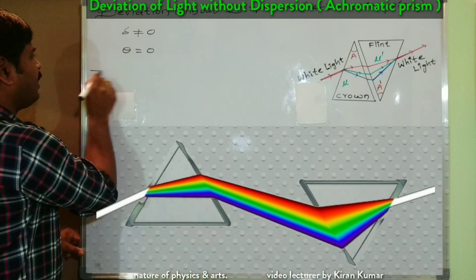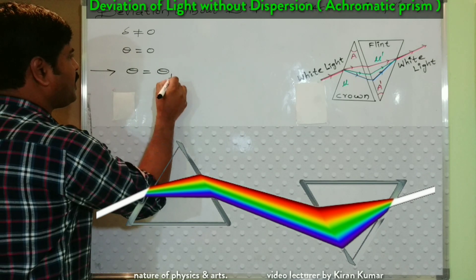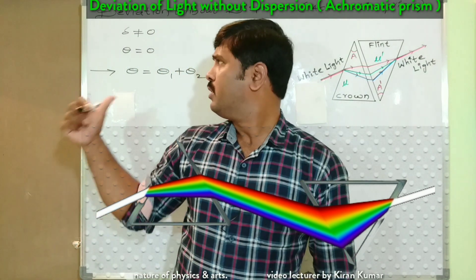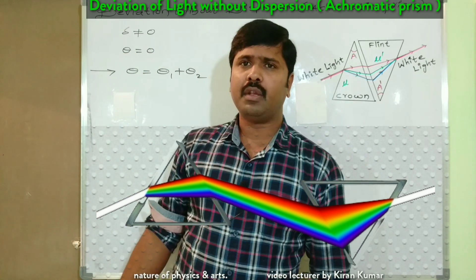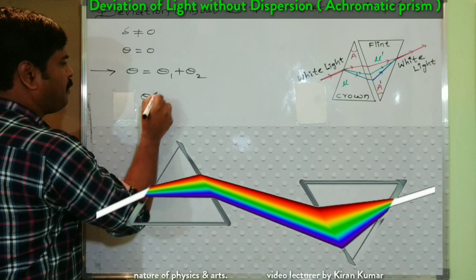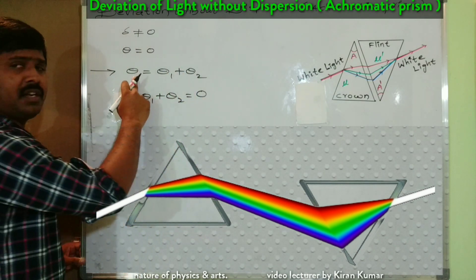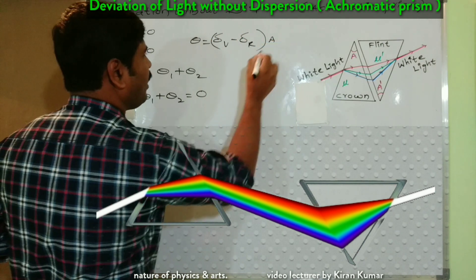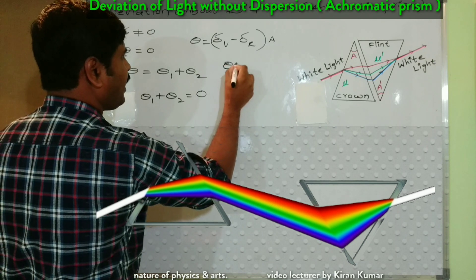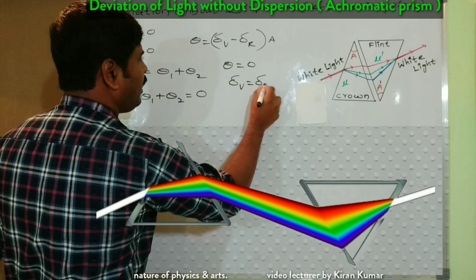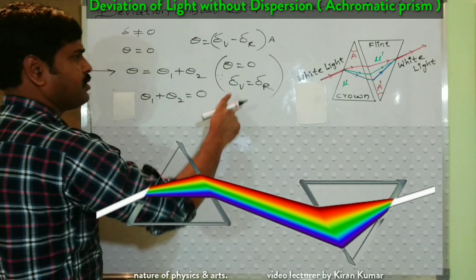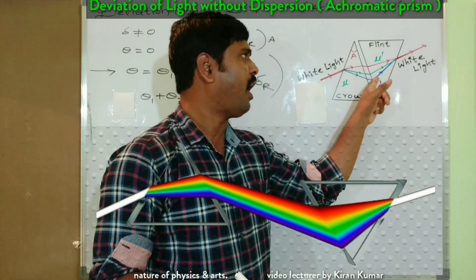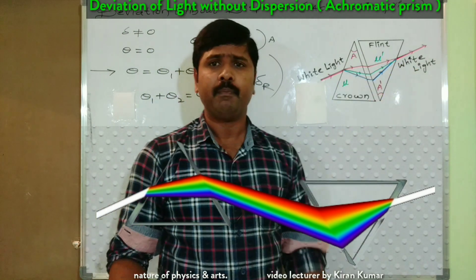According to the total dispersion formula, θ = θ₁ + θ₂. Since θ = 0, we can write θ₁ + θ₂ = 0. The reason is that θ = (δᵥ − δᵣ) × A. Since θ = 0, we can write δᵥ = δᵣ — there is no net dispersion. Violet color overlaps with red color; all colors combine and are released as white light from the flint glass.